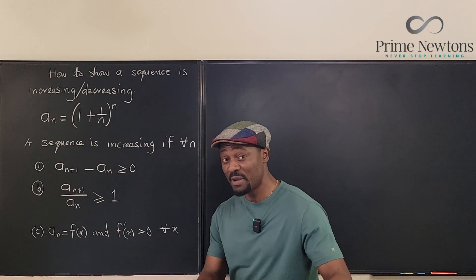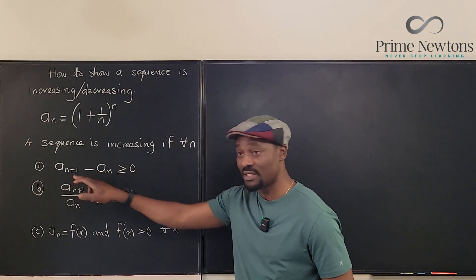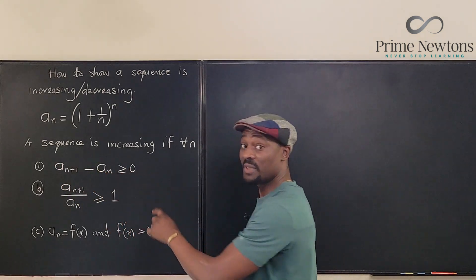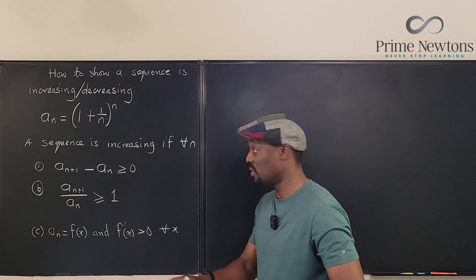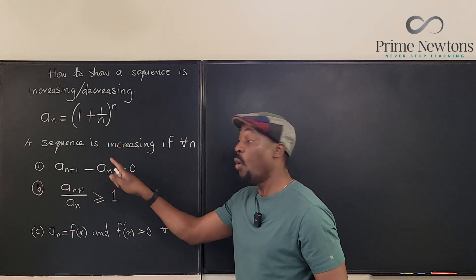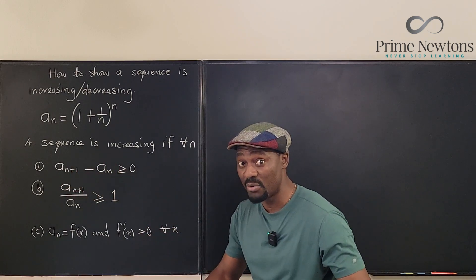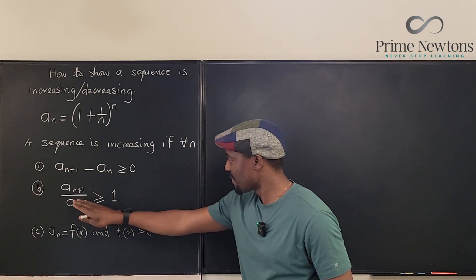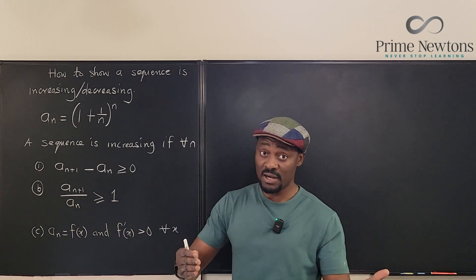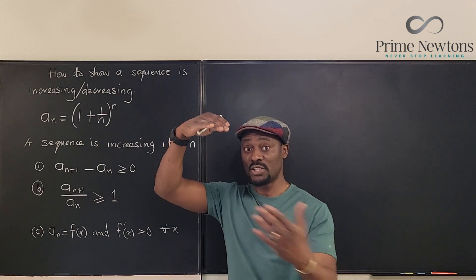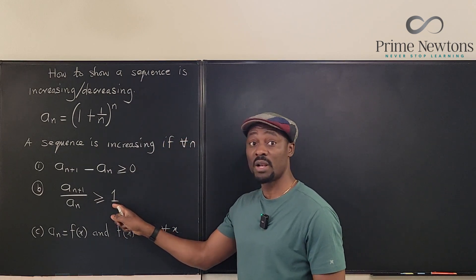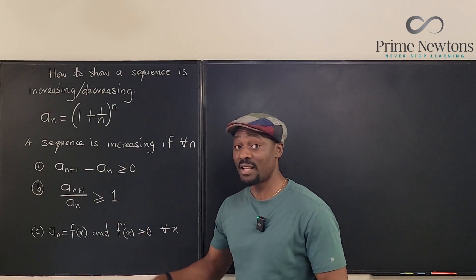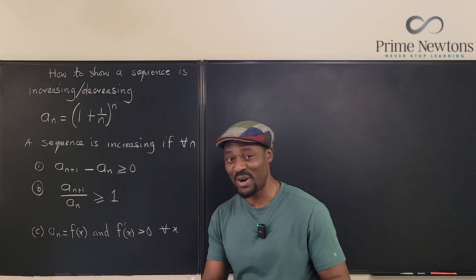The first method is to take the difference: the next term minus the previous term. You must get a number that is at least zero — no negative numbers — showing the next term is at least as large as the previous one, for any n. The second method is the ratio: if a number is bigger than another, putting the bigger one on top gives a ratio greater than or equal to one.